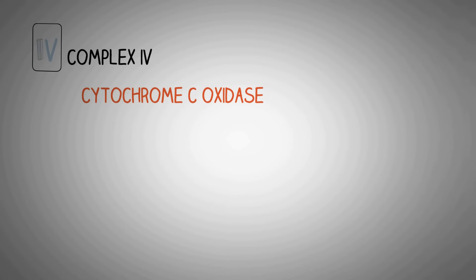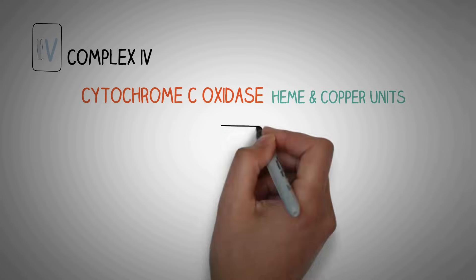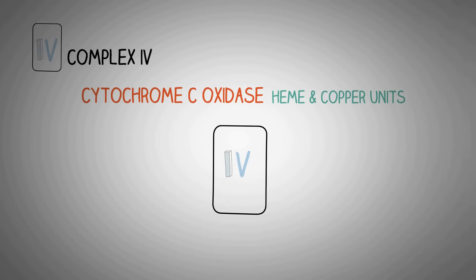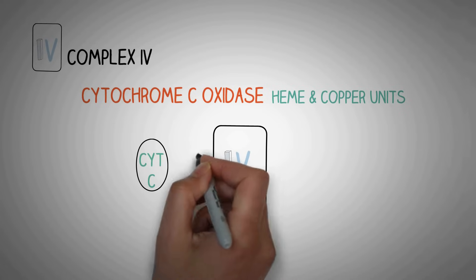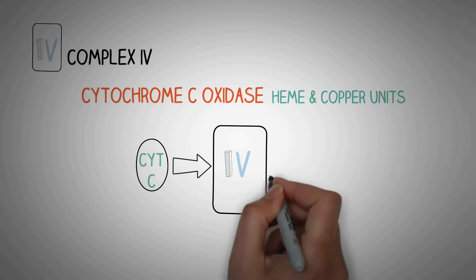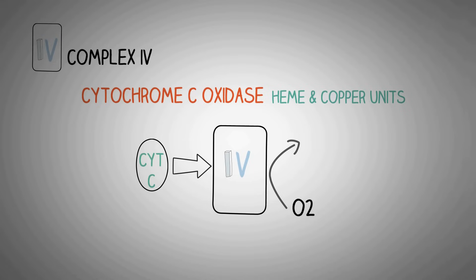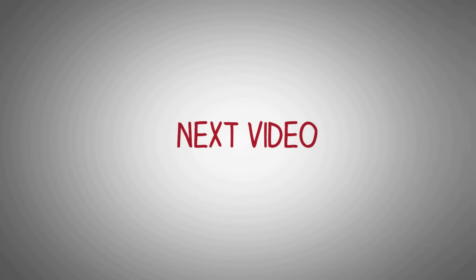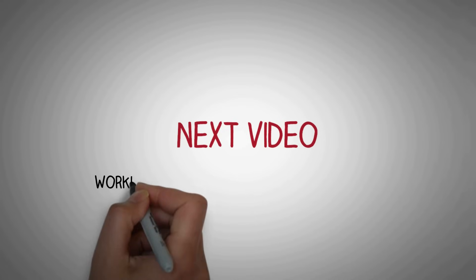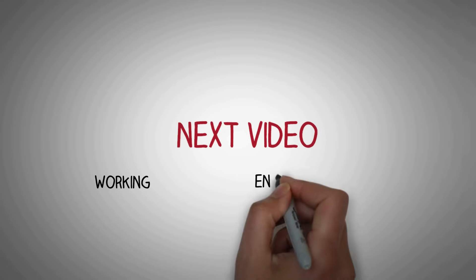Complex 4 is called cytochrome C oxidase. It is a heme and copper-containing complex whose main job is to oxidize cytochrome C — that is, to receive electrons from cytochrome C — and then uses those electrons for the reduction of oxygen to water, hence it is called cytochrome C oxidase. In the next video about the electron transport chain, we will study about how exactly the electron transport chain works.